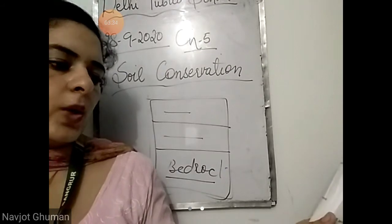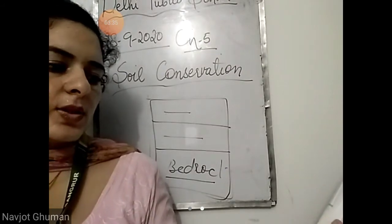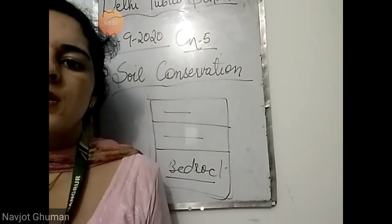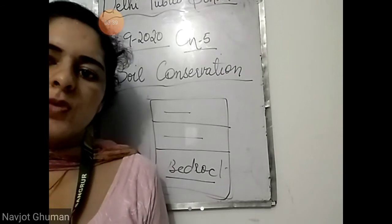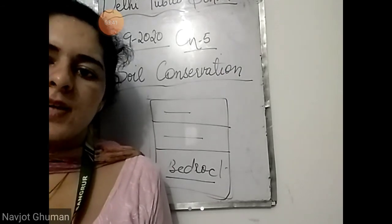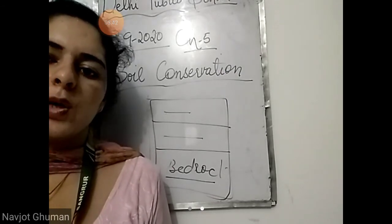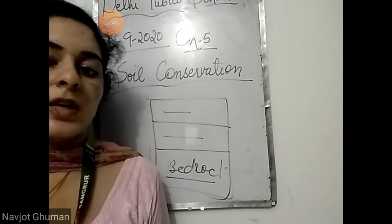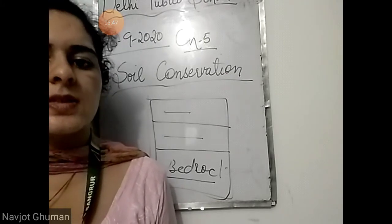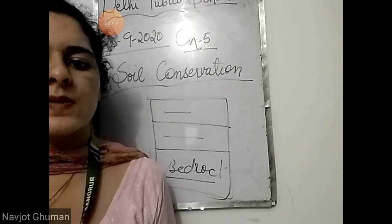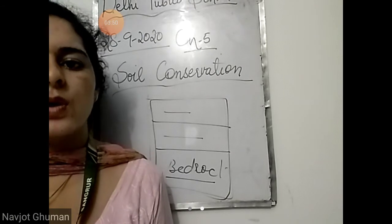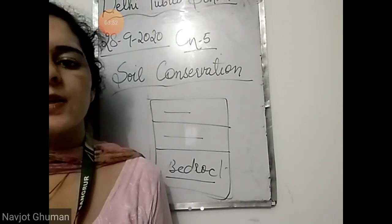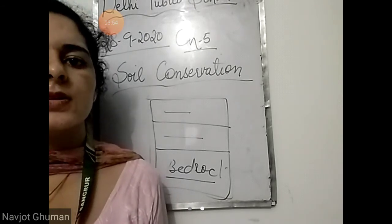What is soil erosion and what increases erosion of soil? The removal of the topsoil by the action of water and wind is called soil erosion. It is increased by several factors: strong winds, heavy rainfall, and cutting down of trees.